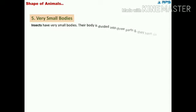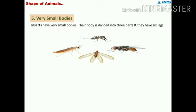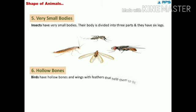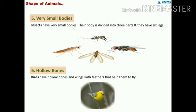Next is very small bodies. Insects have very small bodies; still, their body is divided into three parts and they have six legs. Birds have hollow bones and wings with feathers that help them to fly in the air easily.